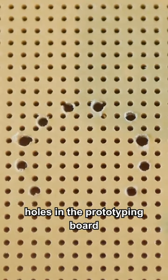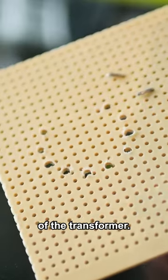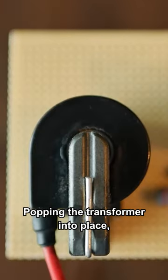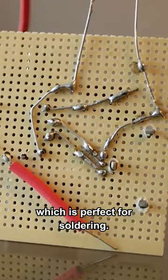Next up, drill holes in the prototyping board so that it matches the pin out of the transformer. Popping the transformer into place, the pins stick out the bottom, which is perfect for soldering.